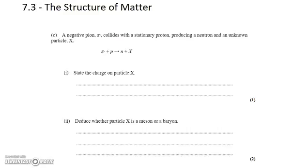David Kahn here with another question from topic 7.3. We're dealing with a negative pion and it collides with a stationary proton, producing a neutron and an unknown particle X.